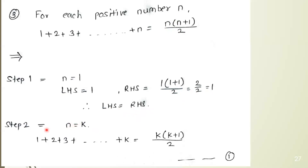Now we prove step number 2, the induction hypothesis. We assume the given statement is true for n equal to k. So we write: 1 plus 2 plus 3 plus dot dot dot plus k equals k(k+1)/2. We assume this statement is true — this is equation 1.